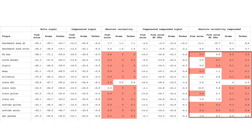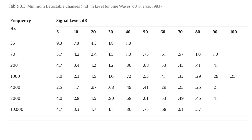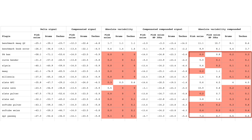The absolute variability compounded columns simulate having ten plugin instances with identical EQ settings on the identical sound — which is obviously exaggerated. Even then, most plugins with the drum recording and techno track are under our half-dB threshold, apart from the SSL Pass EQ which is just on that threshold. One thing to note is that with compounding I'm multiplying inaccuracies in matching the low end, and some low-end rumble on the Neve and a couple of other plugins dramatically reduces when you high-pass filter at 30Hz. As we saw in the table, very low frequencies have a very high JND anyway.